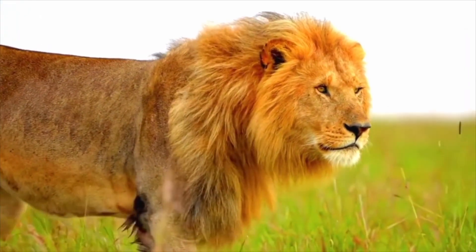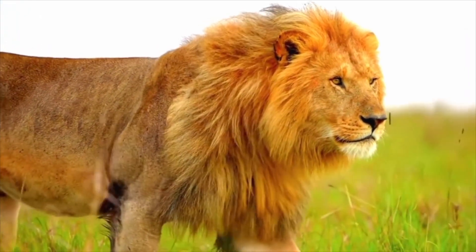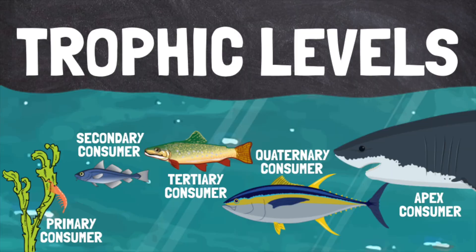These different levels of consumers are called trophic levels. However, sometimes it isn't easy to assign an organism to one of these levels.